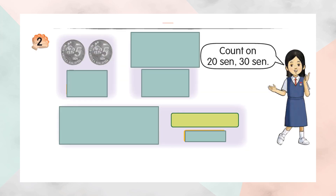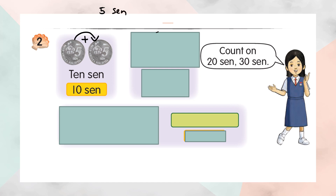Example number two. Five cent plus five cent — it will become ten cent. Five cent plus five cent, you will get ten cent.